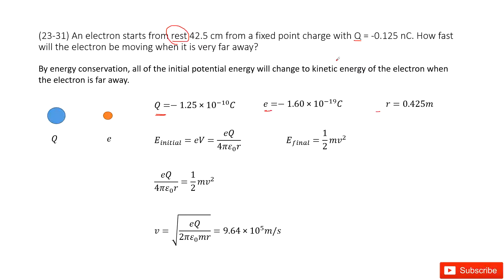How fast will the electron be moving when it is very far away? Keyword: when it is very far away, what does that mean? That means in this case, the potential is zero, so the electric energy becomes zero.